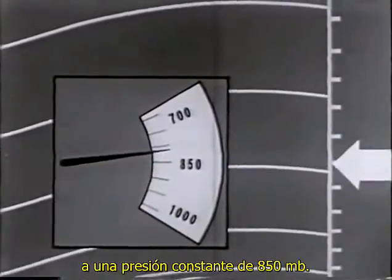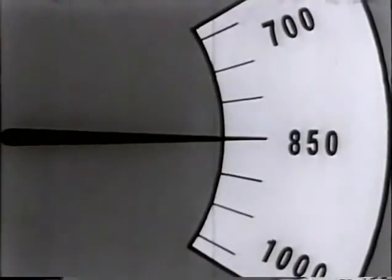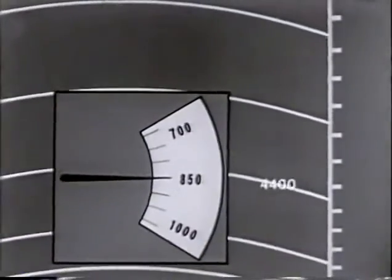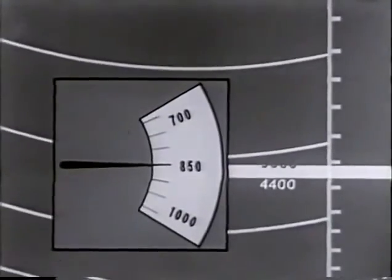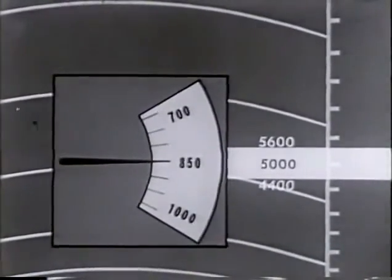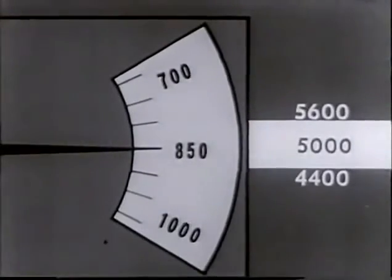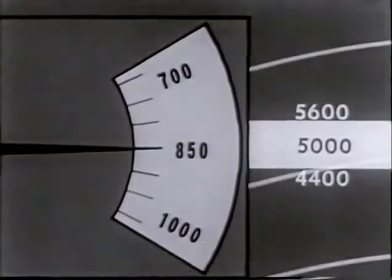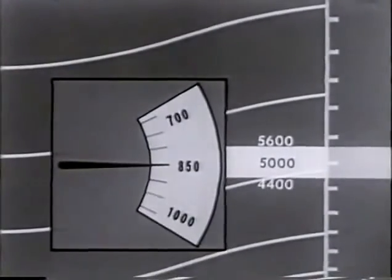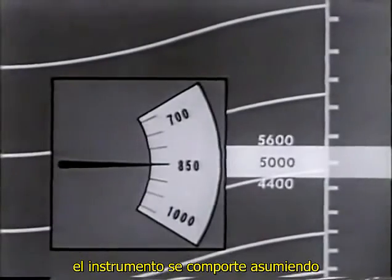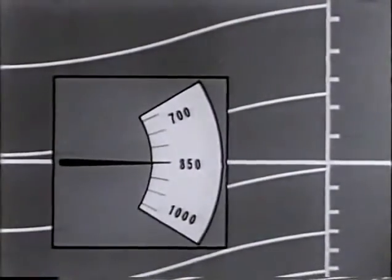Let us now hold the instrument at a constant pressure of 850 millibars. Since we are now following the pressure layers, we obtain a series of height readings. To convert the instrument to a height indicator, we must decide which height is to go on the scale. An answer to this important question had to be found before a practical height indicator could be developed for aircraft. The solution was found by making the instrument behave as if it were in an assumed constant atmosphere, in which the pressure-height relationship never varies.